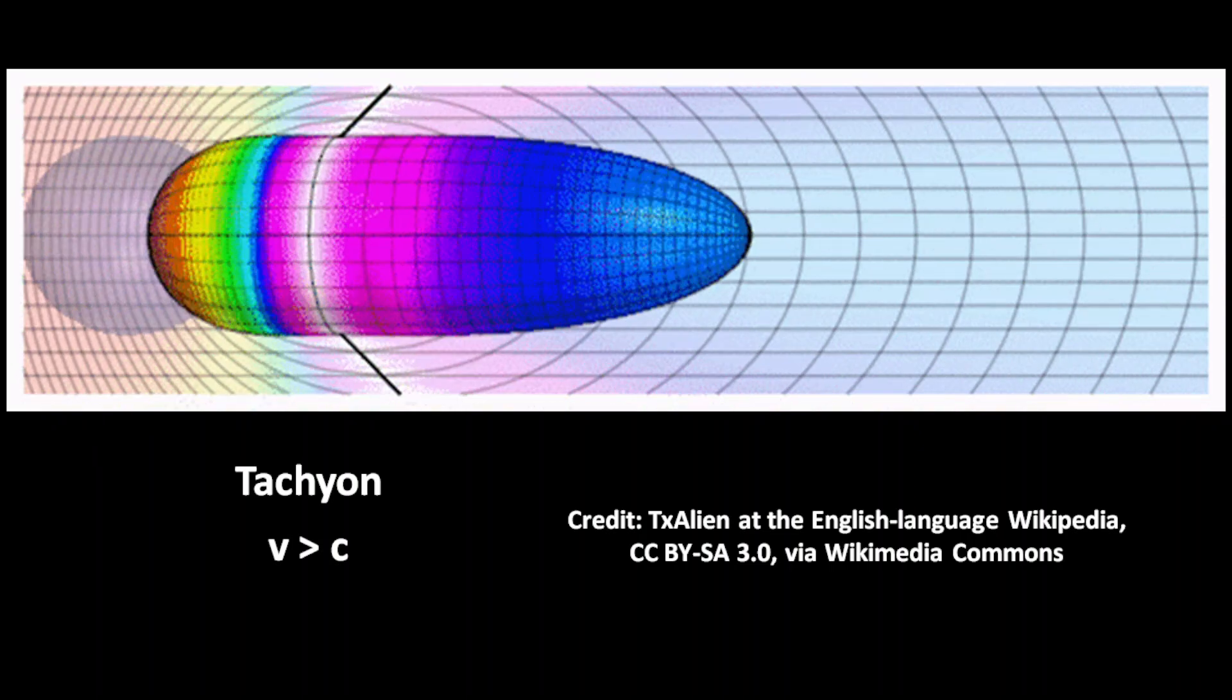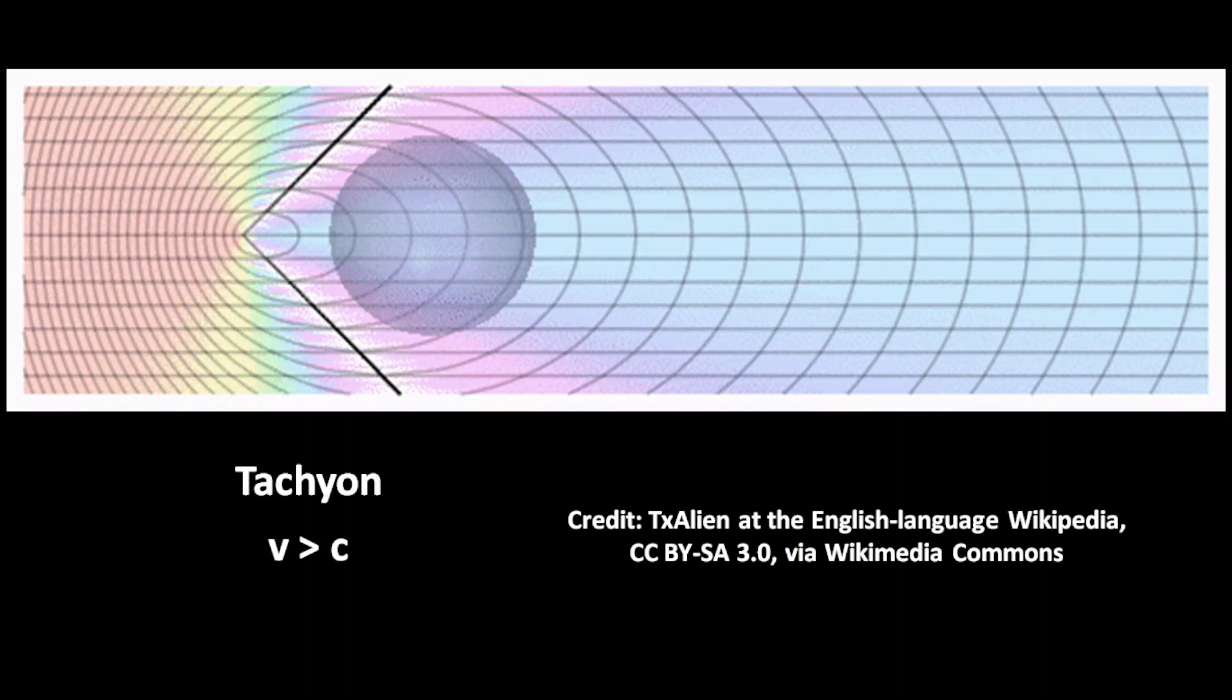After the tachyon has passed our point of view, two images can be seen appearing and departing in opposite directions.